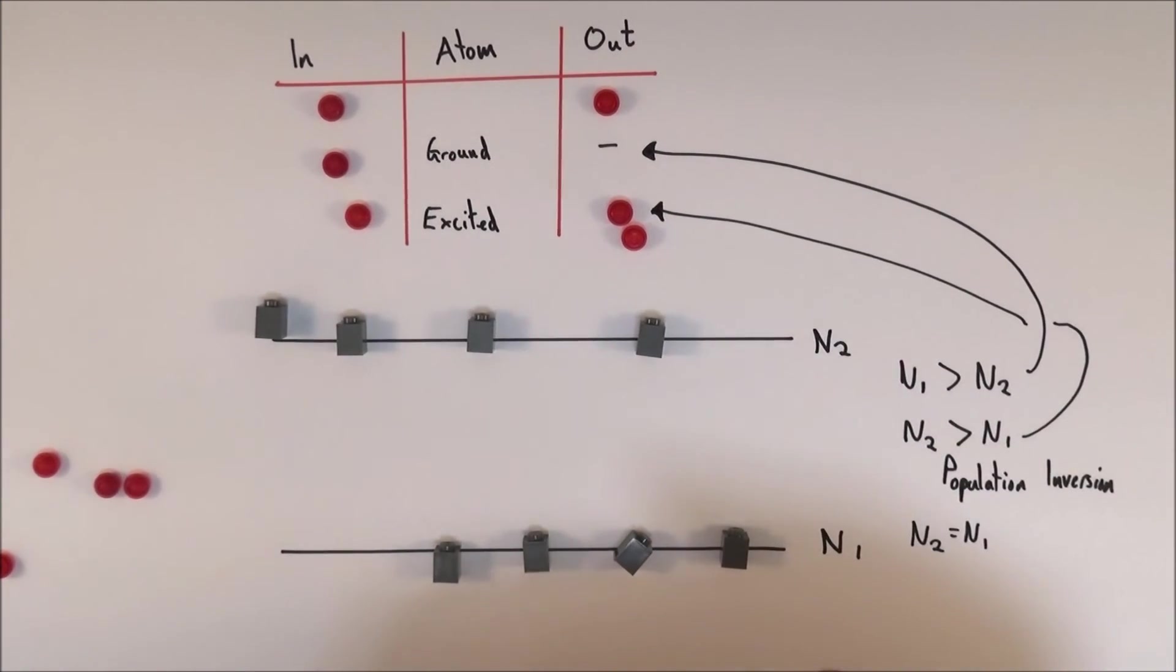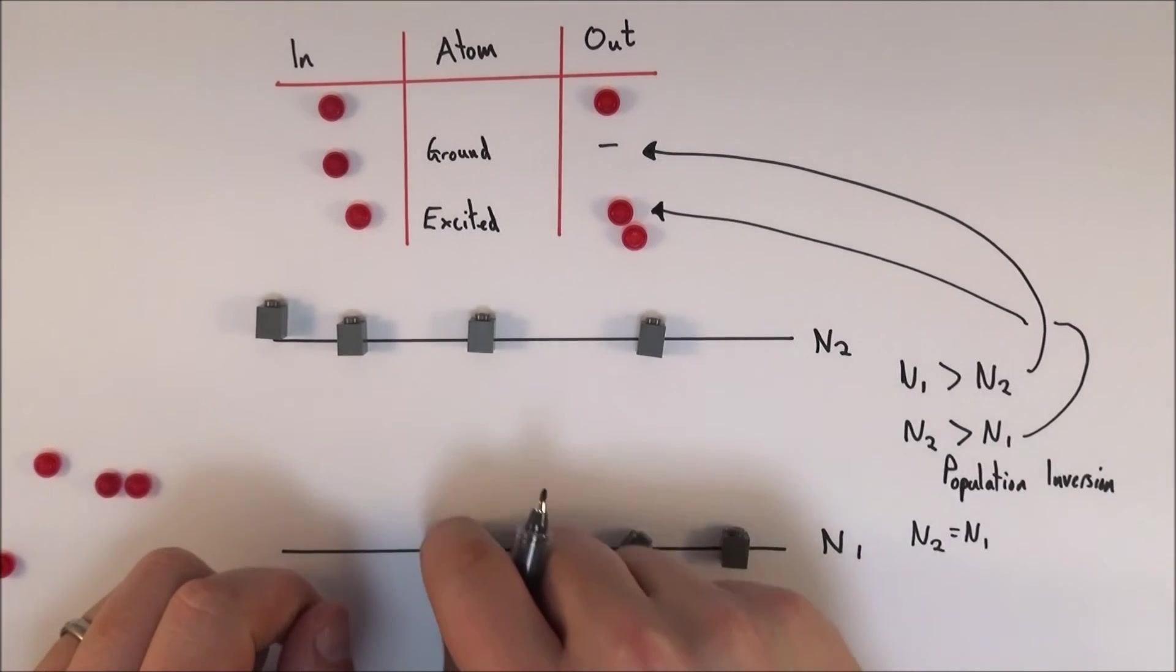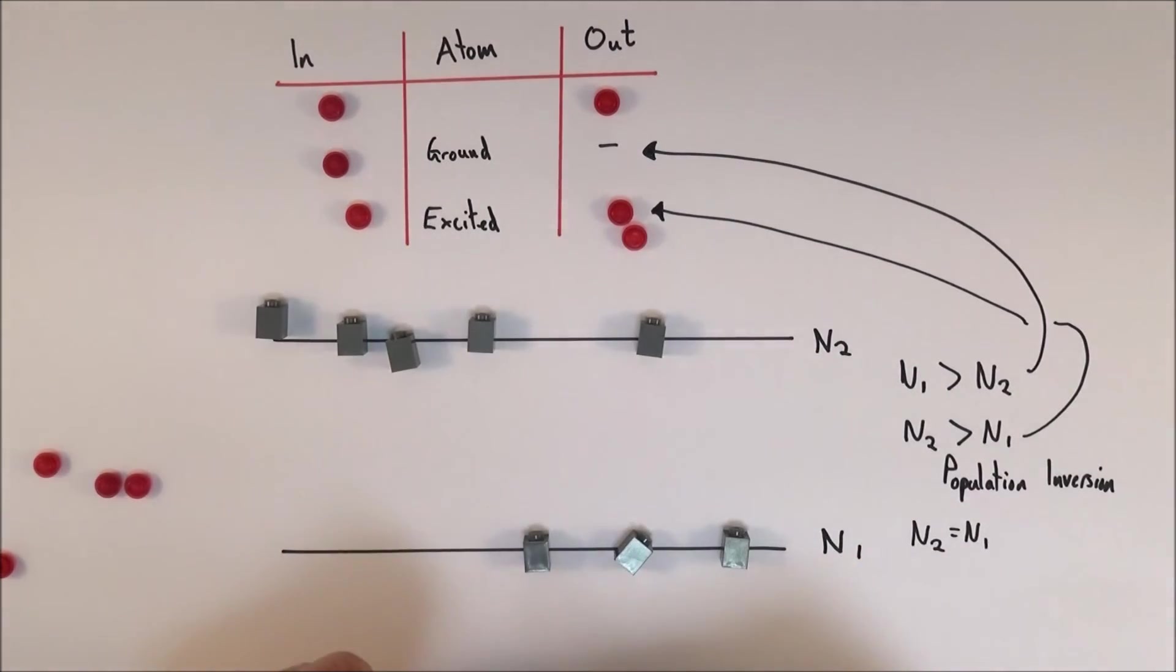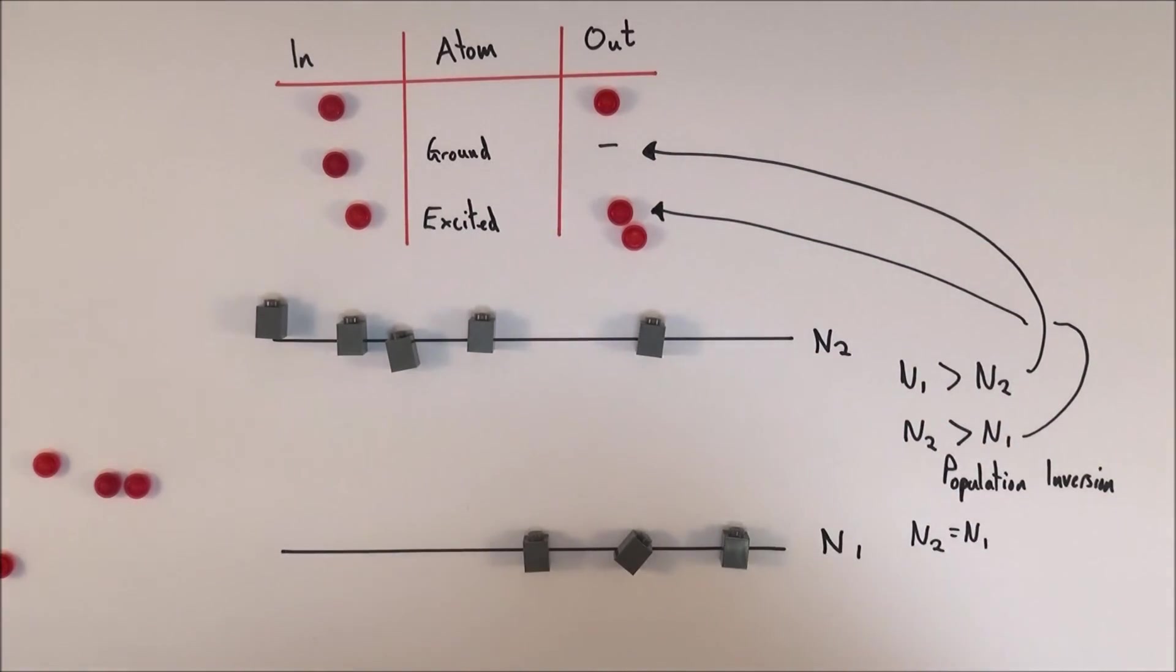What we need to look at is what we call a three or a four level system. And what we can then do is something called pumping. Pumping of light is when you put light in and you're effectively pumping energy into the system to raise things up to an excited state beforehand. I hope that makes sense. I've got another video coming up that looks at why we use three and four level systems to get this population inversion to actually have a huge amount of photons given out in lasers.